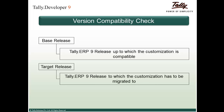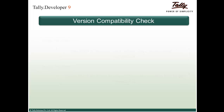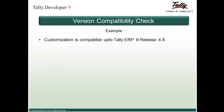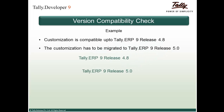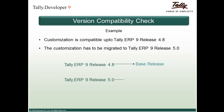The base release is the Tally ERP 9 release up to which the customization is compatible. The target release is the release to which the customization has to be migrated. For example, if a customization is compatible up to release 4.8 and needs to be migrated to release 5.0, then release 4.8 is the base release and release 5.0 is the target release.